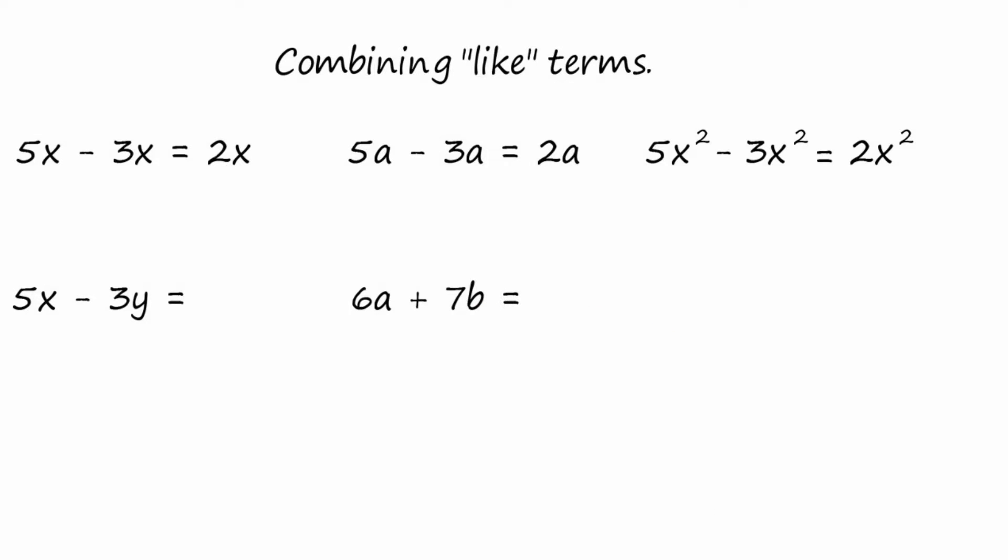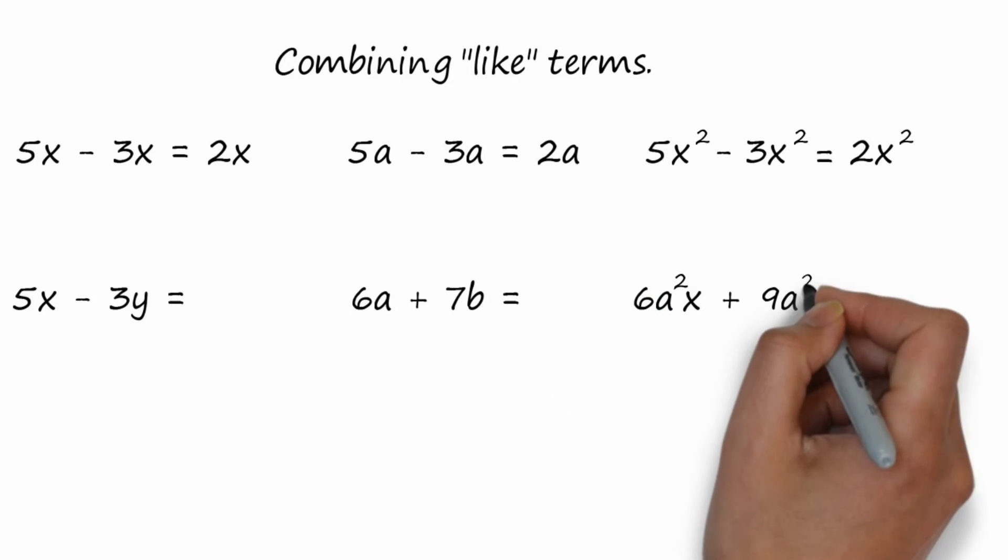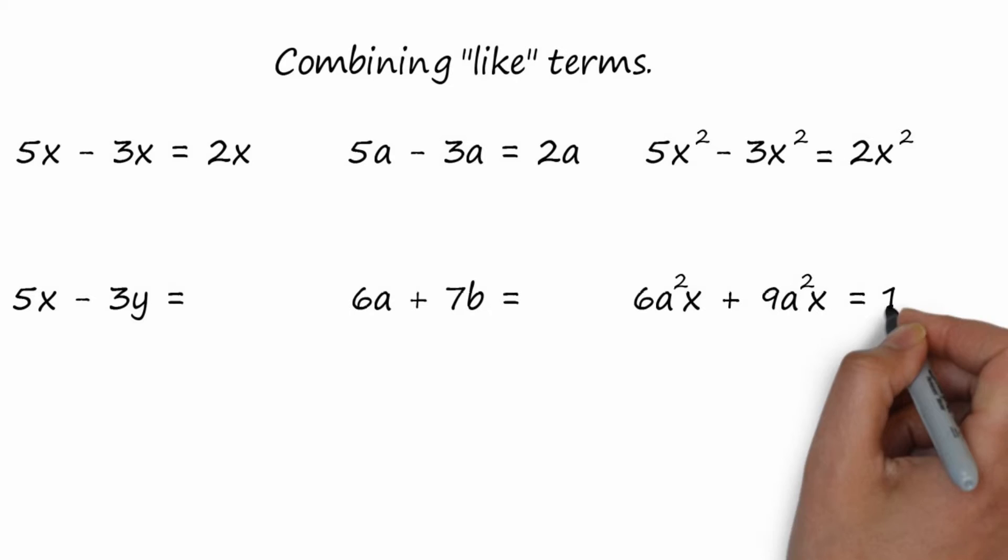But watch this. Even if we had something like 6a²x + 9a²x, these can be combined because they're both a²x. And it would be 15a²x.